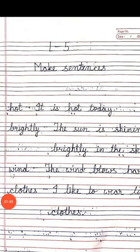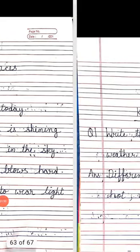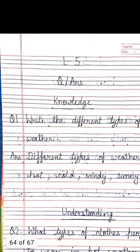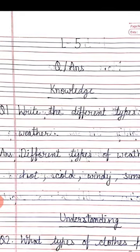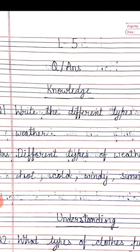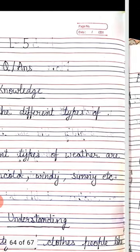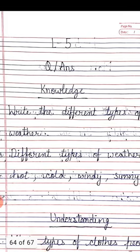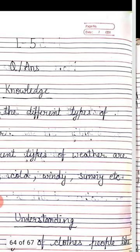Come to the next page. Lesson 5 question answers. Section A: Knowledge. Question 1: Write the different types of weather. Answer: Different types of weather are hot, cold, windy, sunny, etc.